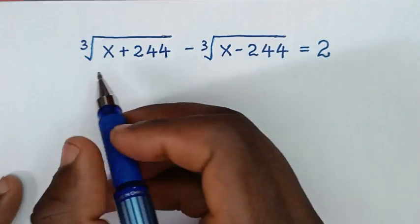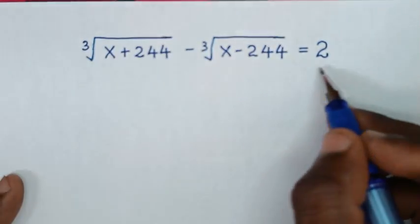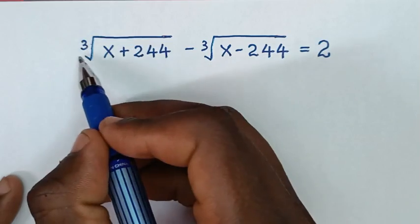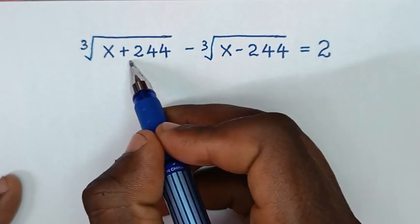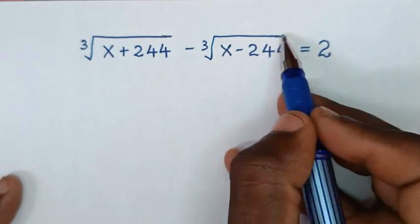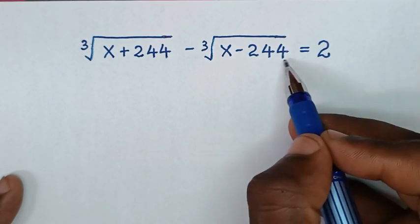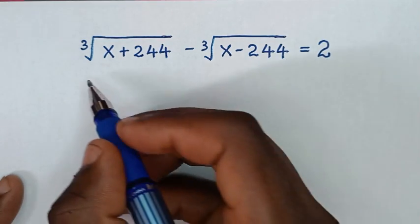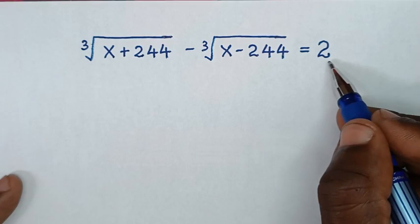Hello, you are welcome to solve this math problem: cube root of x plus 244 minus cube root of x minus 244 is equal to 2. We need to find the values of x from this equation.